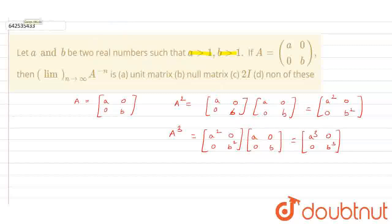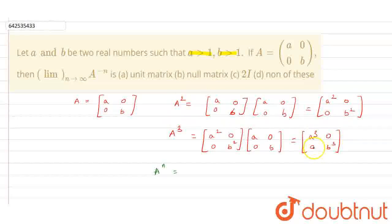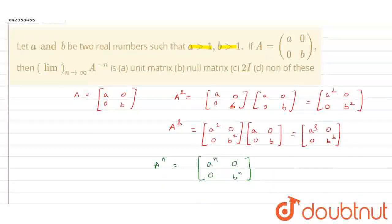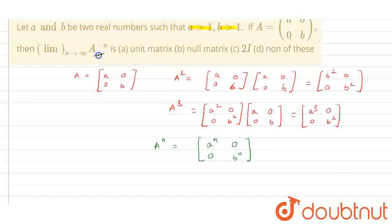Now let us calculate the value for Aⁿ using these results. If A raised to power 2 gives [[a², 0], [0, b²]], and A cubed gives [[a³, 0], [0, b³]], we can see that the powers carry through directly. So by the general formula, A raised to power n equals [[aⁿ, 0], [0, bⁿ]]. But what we need to calculate is A raised to power minus n.